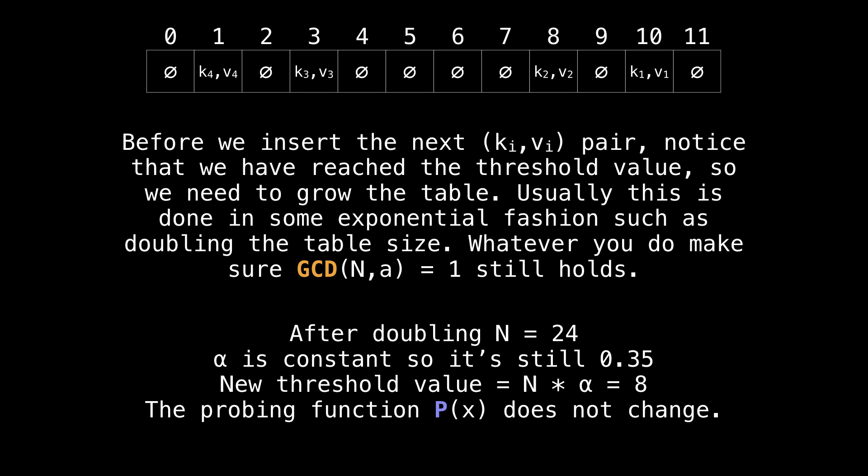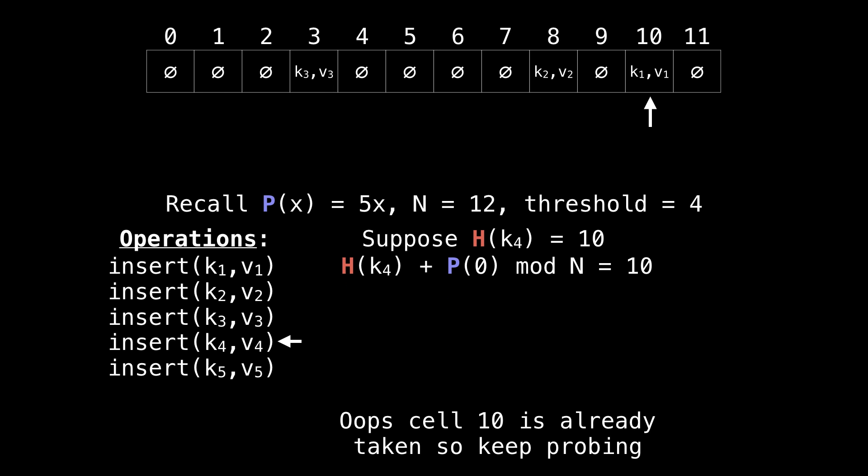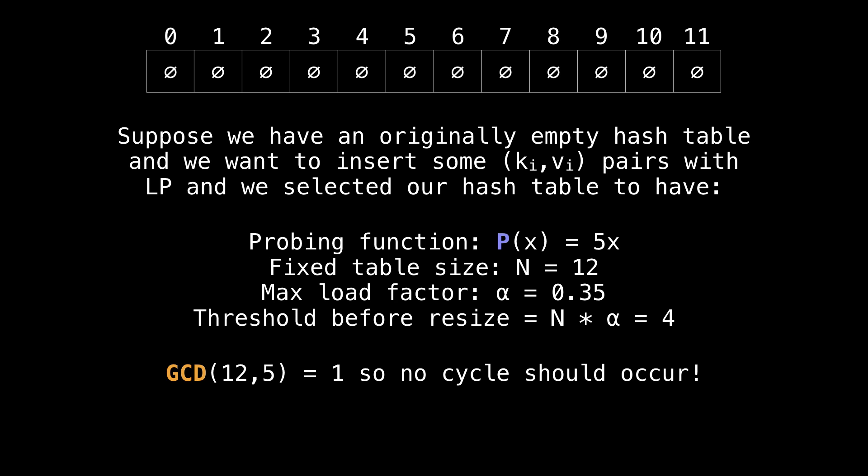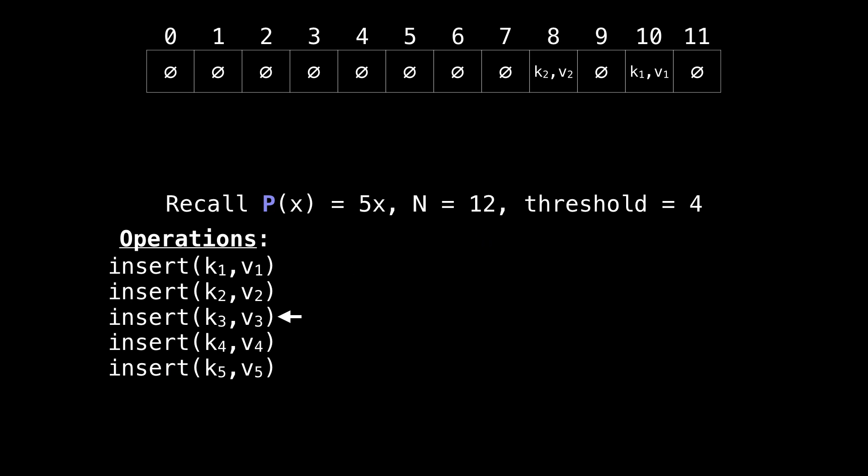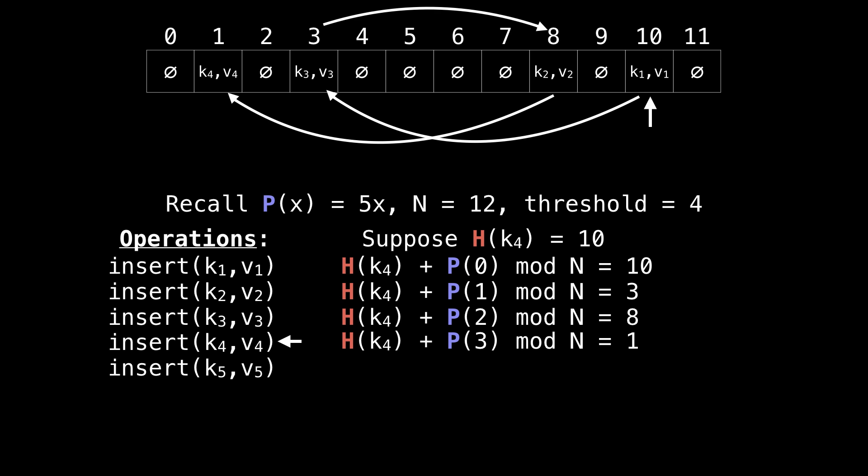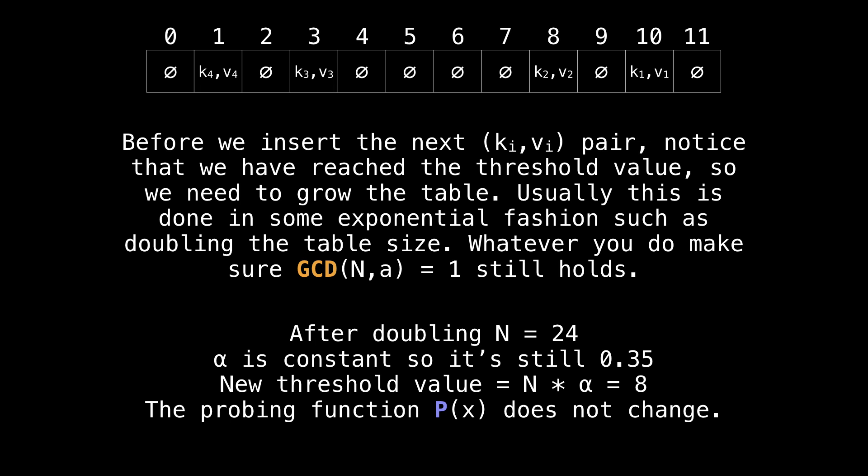However, now notice that we've actually reached the threshold of our table. We can see that I picked alpha to be 0.35, so N, which is the table size times alpha, gave us four. And we just finished inserting the fourth element, so it's time that we resize the table. How we usually resize the table is via some exponential fashion, such as doubling or tripling. But we need to double in such a way that the GCD of N and a still holds. So after doubling, N is equal to 24, and the GCD property is still good. Alpha is a constant, so it's still 0.35. So our new threshold is just going to be eight, and we don't change the probing function.